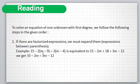Example: if we have the equation 15 minus 2 times (M minus 9) equal to 3 times (M minus 4), this equation is equivalent to 15 minus 2M. We use the distributive property of multiplication over subtraction or addition to remove the parentheses. Then we get 15 minus 2M plus 18, because minus 2 times minus 9 equals plus 18.